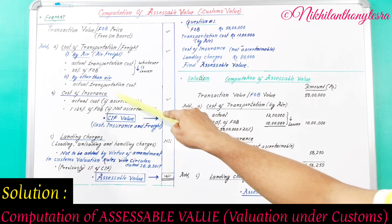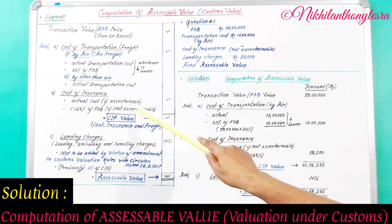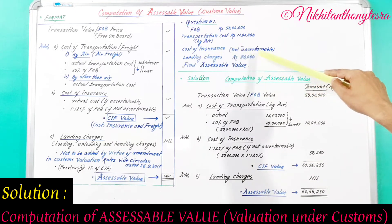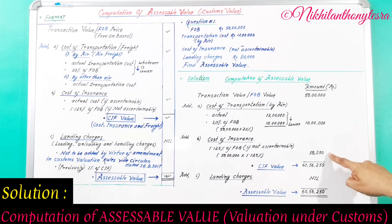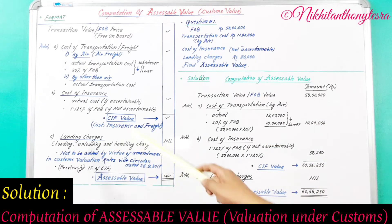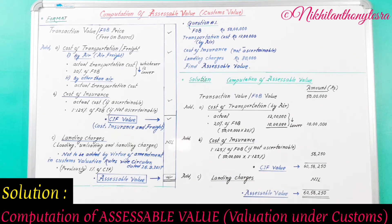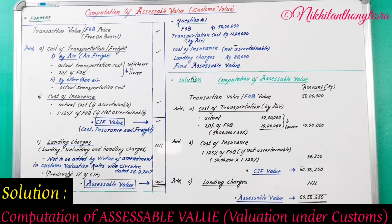Next, we add cost of insurance. Since the actual cost is not ascertainable, we apply 1.125% of FOB: 50 lakhs × 1.125% = Rs. 56,250. Adding FOB, cost of transportation, and cost of insurance gives us CIF value. For landing charges, although Rs. 80,000 is given in the question, as per the latest amendment in customs valuation rules, landing charges will be nil. Therefore, the CIF value of Rs. 60,56,250 is equal to the accessible value of Rs. 60,56,250.